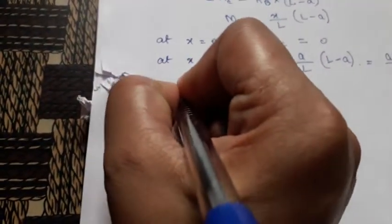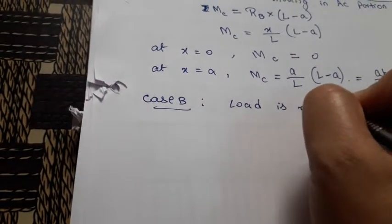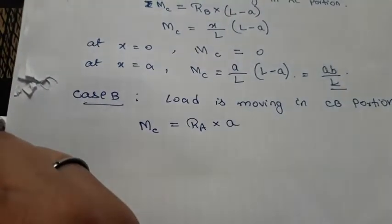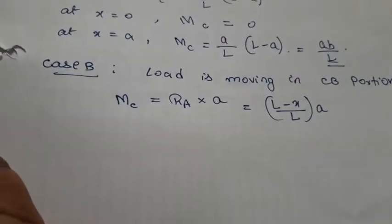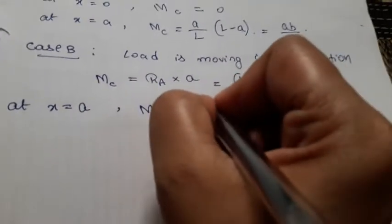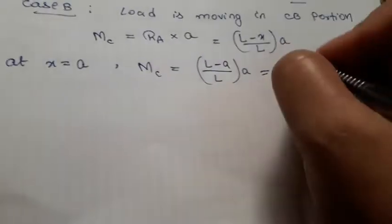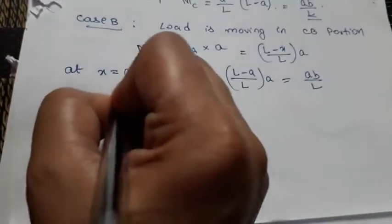Case 2: when the load is moving in the CB portion. Here we take the left portion, so MC = RA × A. RA = (L − X)/L, so MC = (L − X)/L × A. At X = A, MC = (L − A)/L × A = AB/L, since L − A = B. Both cases give the same maximum ordinate AB/L at point C.